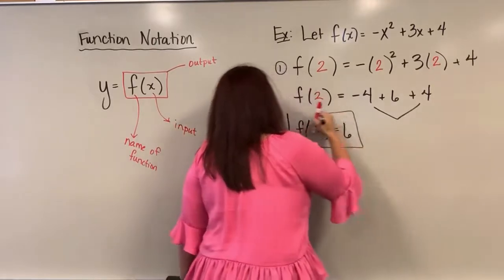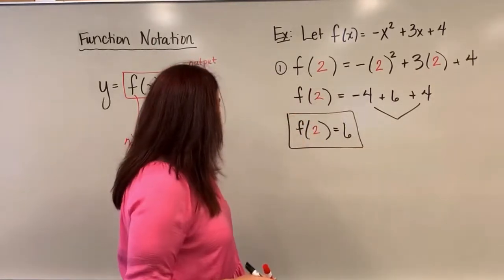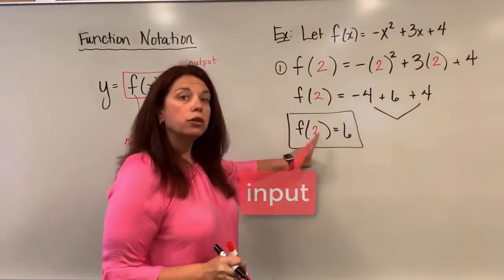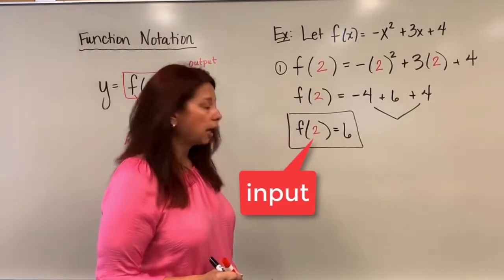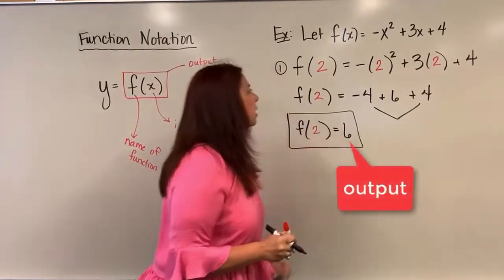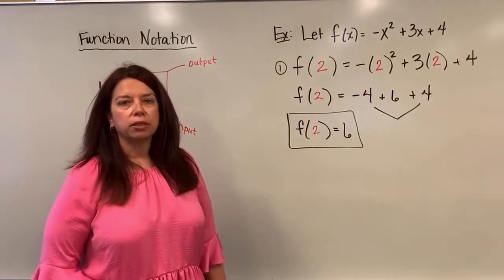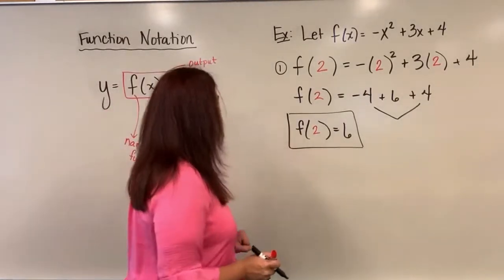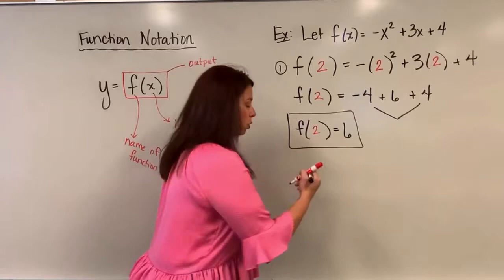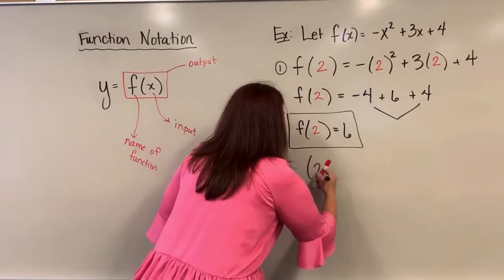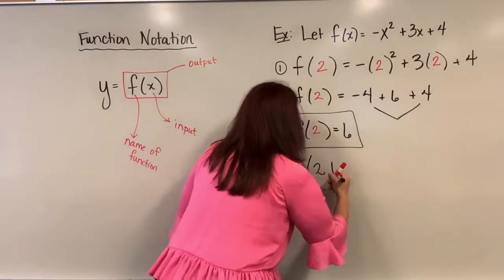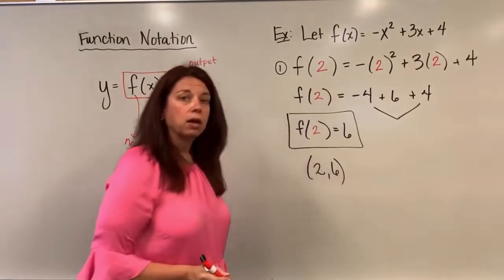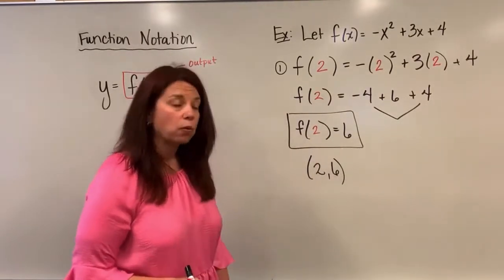I'd like to pause for a second and say a reminder here: the 2 is the input and the 6 that I obtained after all of that work is considered the output. I have now essentially, I can write this as an ordered pair if I wanted to. For an input of 2, I get an output of 6, and that could be an ordered pair that later I go to graph if I wanted to.